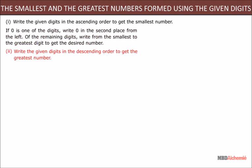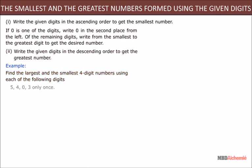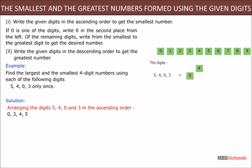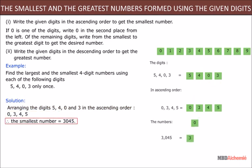Write the given digits in the descending order to get the greatest number. For example, find the largest and the smallest 4-digit numbers using each of the following digits 5, 4, 0, 3, only once. Solution: Arranging the digits 5, 4, 0, and 3 in the ascending order: 0, 3, 4, 5. Therefore, the smallest number is 3045.